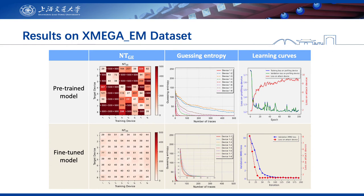Apart from power analysis, EM-based side-channel attack is becoming more popular. We note that EM measurements are very sensitive to probe placement. When we consider a realistic profiled attack scenario, the probe must be moved from the profiling device to the target device, so there is always a slight difference in probe placement caused by human error in position, distance, and rotation. To investigate this impact, we perform cross-device experiments on the XMEGA-EM dataset. We observe that the NT matrix is very similar to the XMEGA dataset results. As expected, fine-tuned models outperform pre-trained models significantly, and the evolution of MMD loss is highly consistent with the test loss, confirming our previous results.